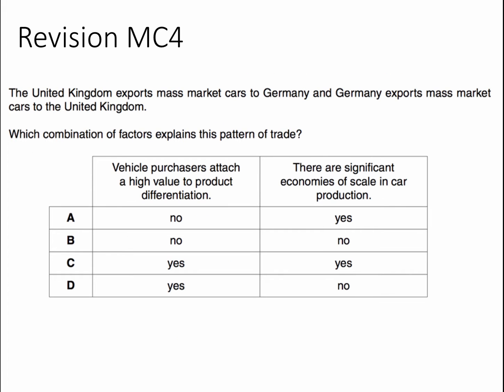And here's question four in our cluster of four questions on trade. The UK exports mass market cars to Germany, and Germany exports mass market cars to the UK. Which combination of factors explains this pattern of trade? Press the pause button when you're ready, have a go, and I'll be back with the right answer.